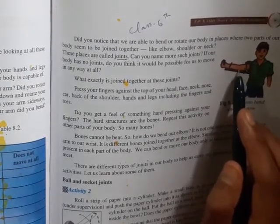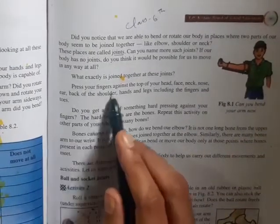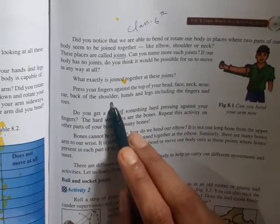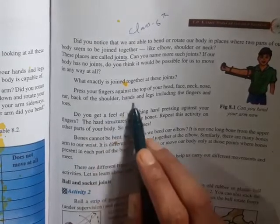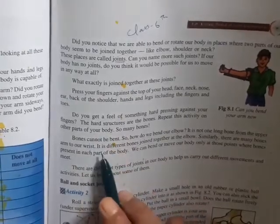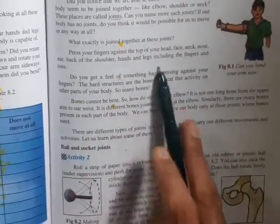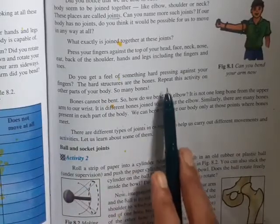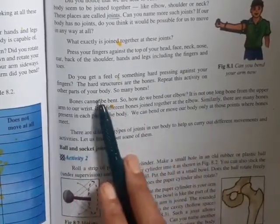Press your fingers against the top of your head, face, neck, nose, ear, back of the shoulder, hands and legs including the fingers and toes. Do you feel something hard pressing against your fingers? The hard structures are the bones. Repeat this activity on other parts of your body.